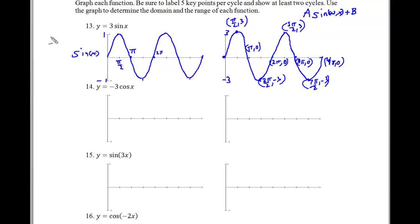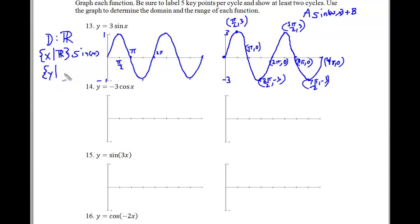The domain of 3sin(x) is all real numbers since there are no breaks. Using set notation: x is real. The range is y between negative 3 and 3 inclusive, written as negative 3 ≤ y ≤ 3. We can also express the domain using interval notation.